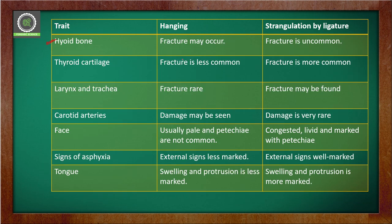The sixth trait is the hyoid bone: in hanging, fracture of the hyoid bone is visible, but in ligature strangulation there is no fracture of the hyoid bone. The seventh trait is the thyroid cartilage: fracture is less common in hanging, but in strangulation by ligature, fracture of the thyroid cartilage is more common. So in hanging, hyoid fractures occur but thyroid cartilage fractures do not, and in strangulation it is the reverse.